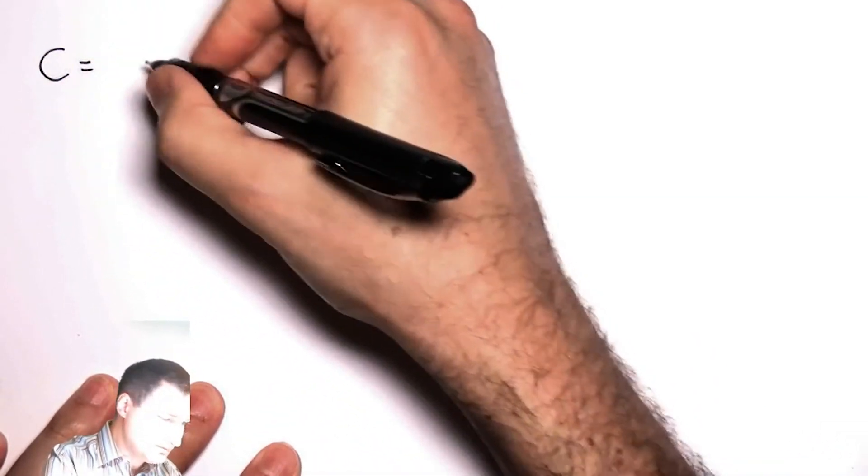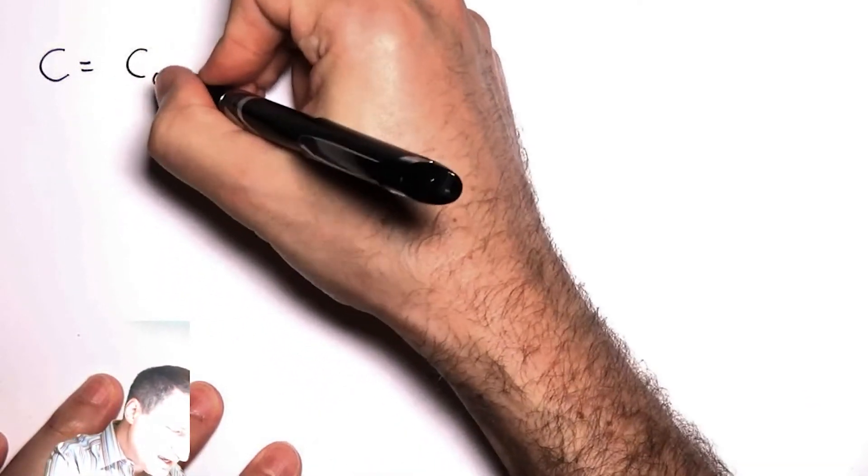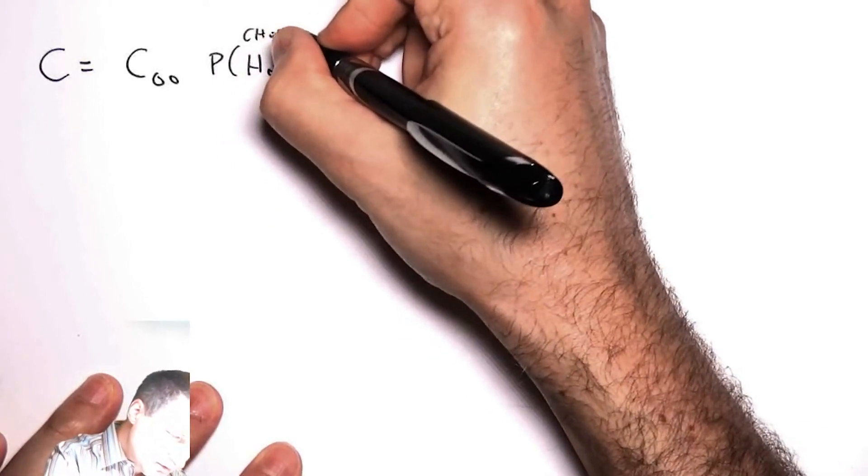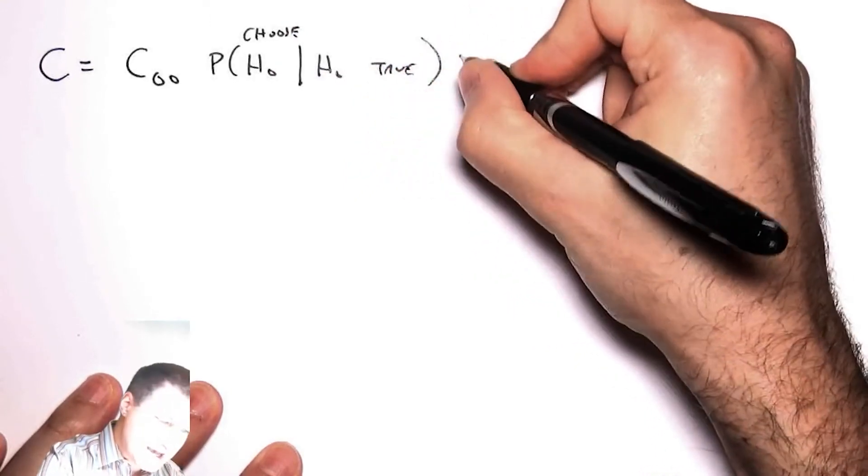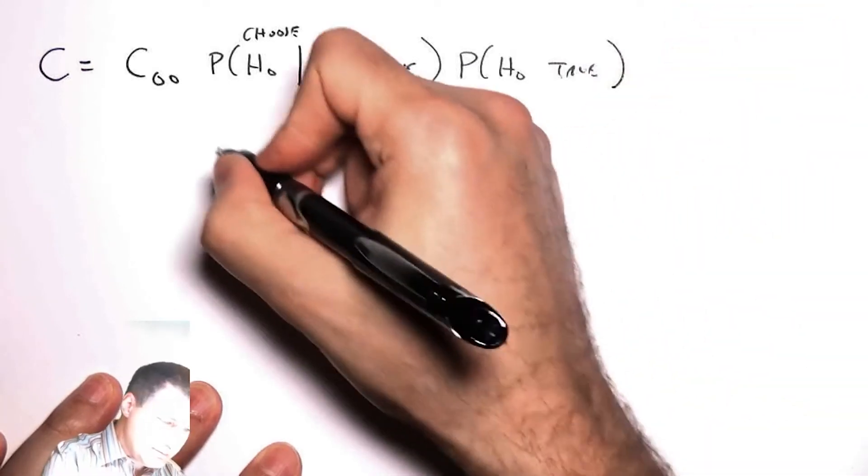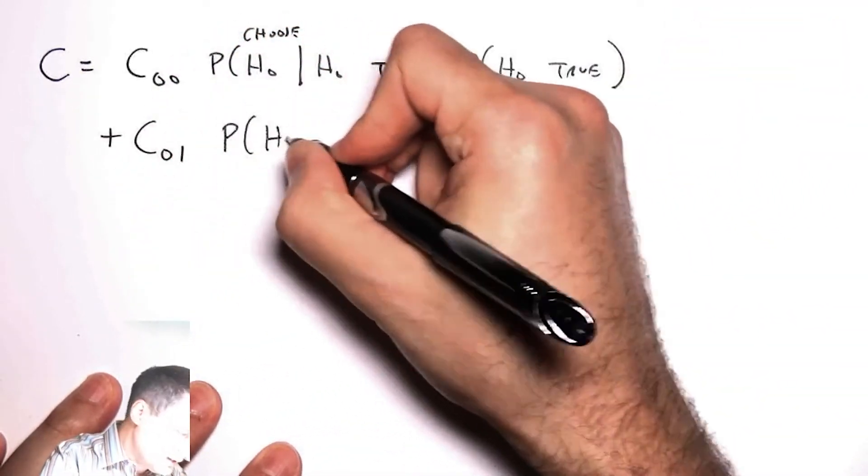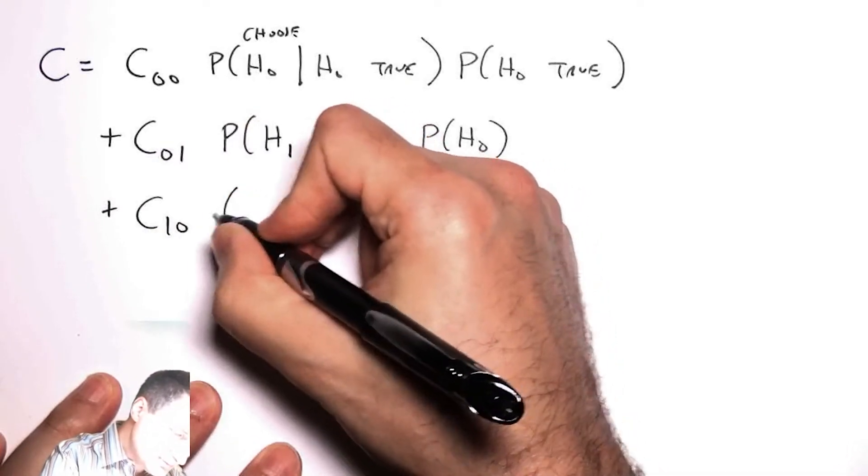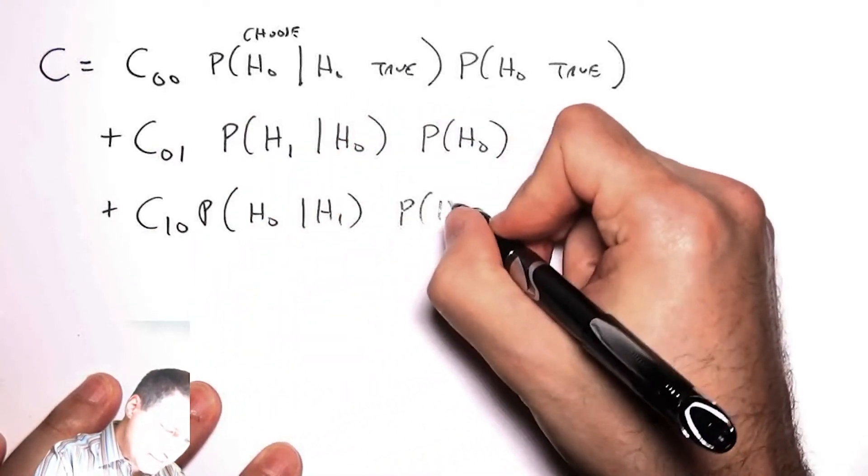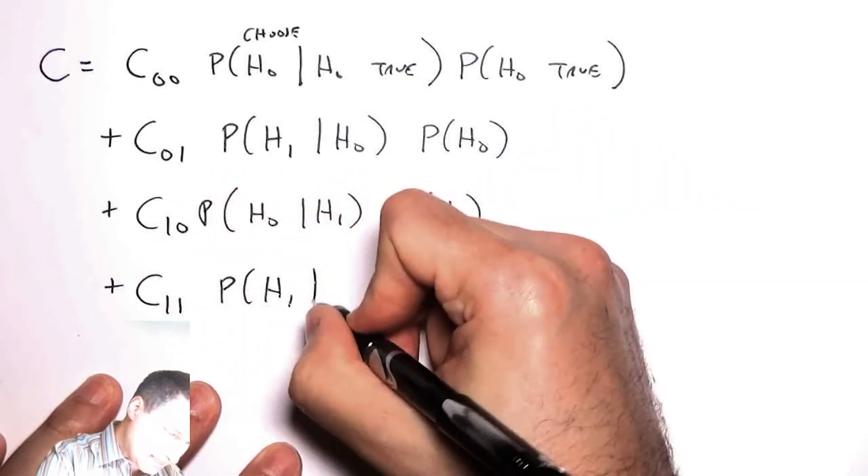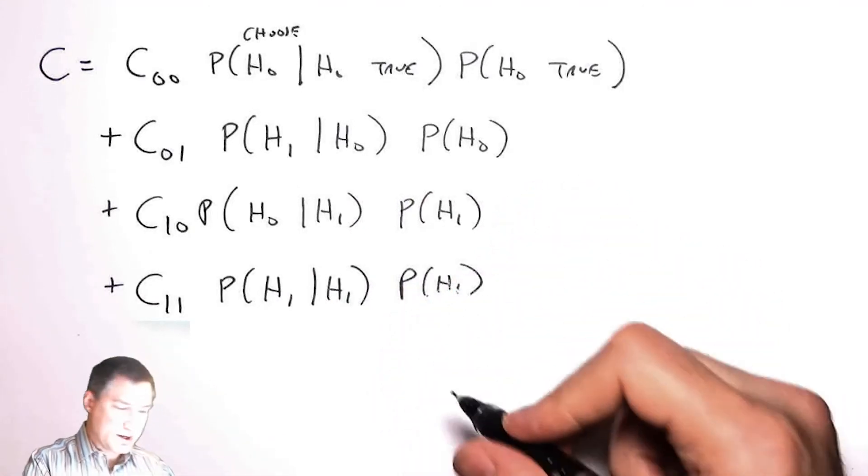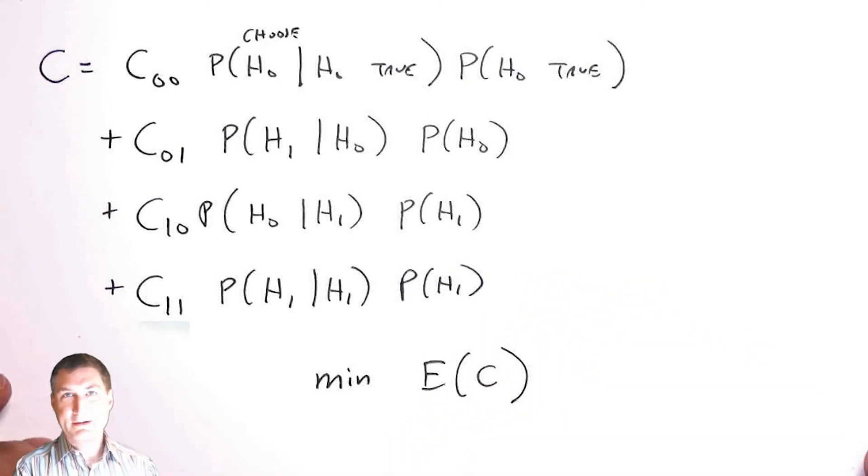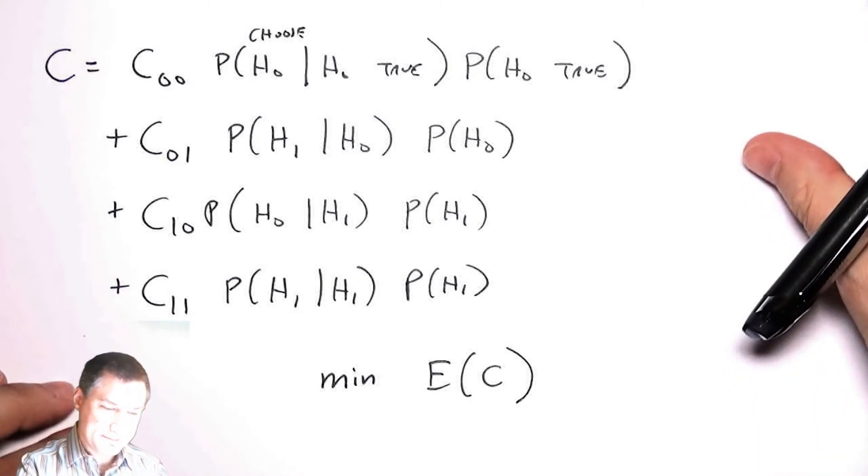And so my overall cost is going to basically be the thing that I want to minimize. That's like saying I have C00 times the probability of making the H0 choice given that H0 is true times the probability of H0 is true in the first place. And then I have the other costs as well. This is like saying I choose H1 given H0, probability of H0. So basically there are four possibilities. And what I want to do is I want to minimize the expected value of the cost. That seems like it makes a lot of sense, and that's what's called Bayesian decision rule.